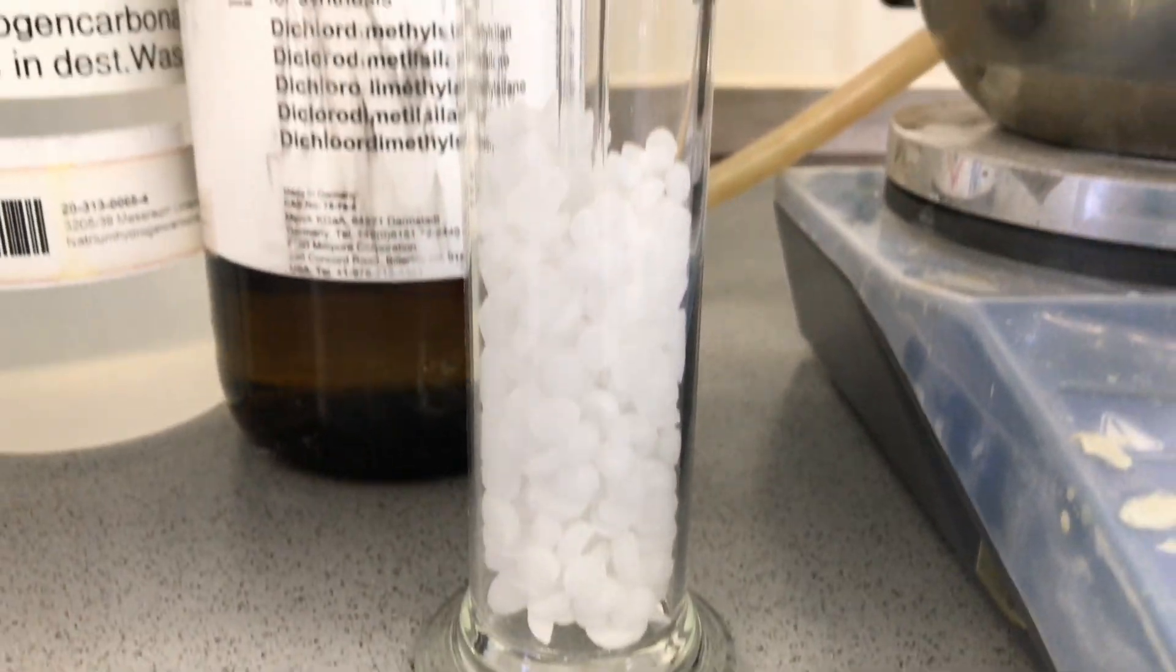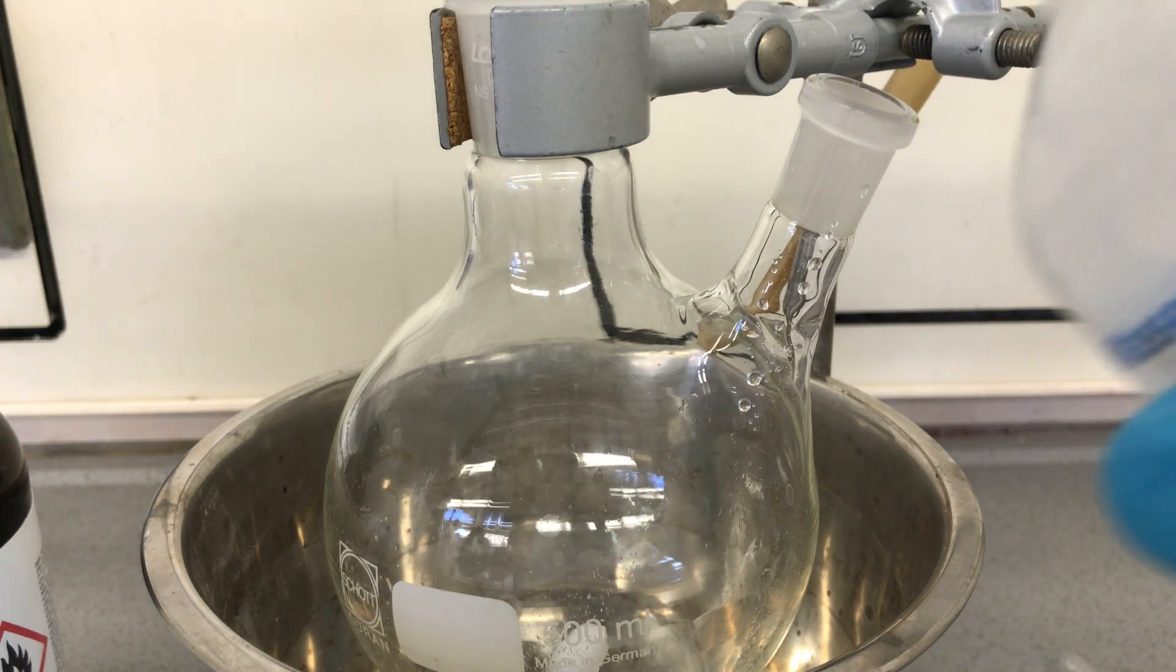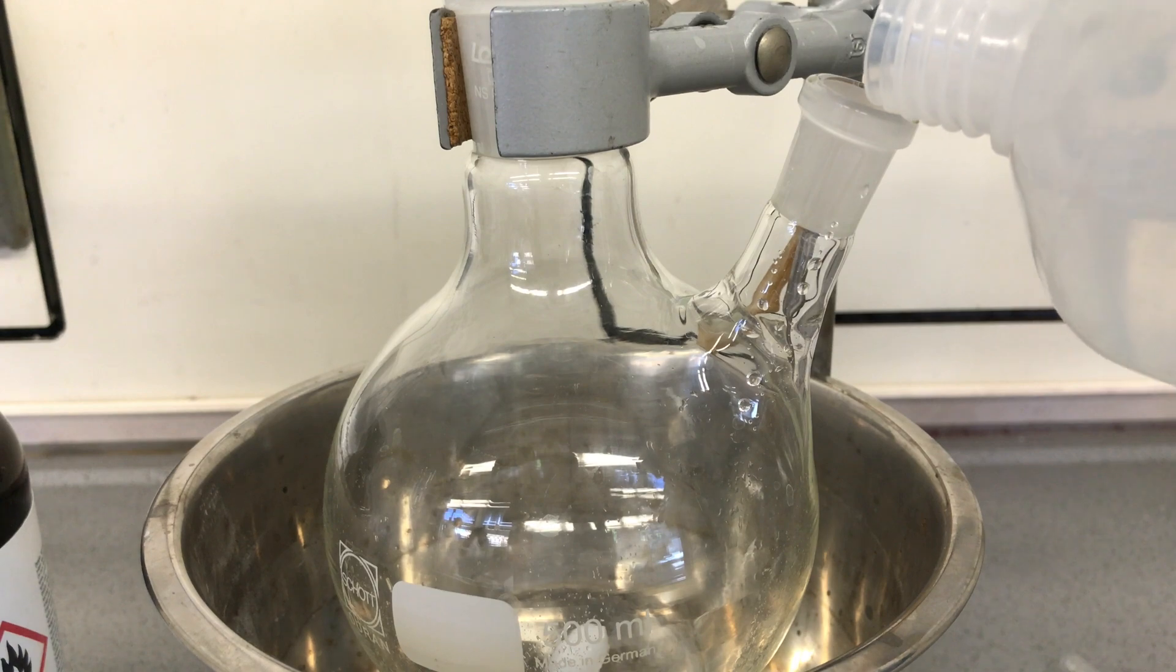During this procedure toxic hydrogen chloride gas will be produced. A washing bottle was therefore filled with sodium hydroxide pellets to act as a gas scrubber.